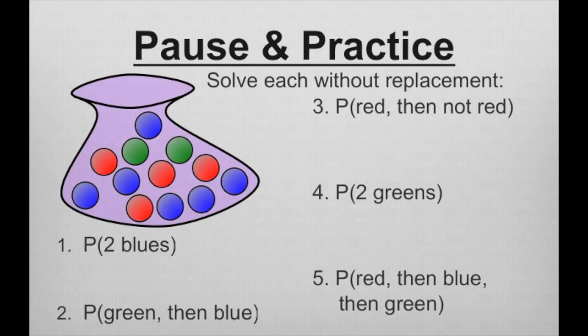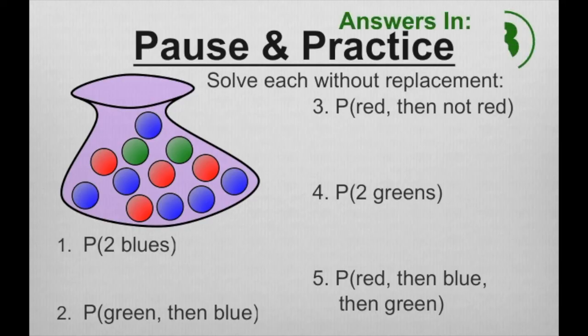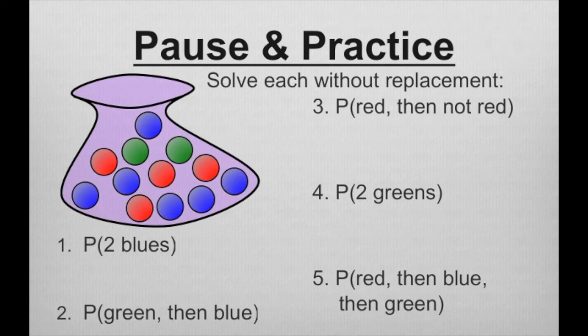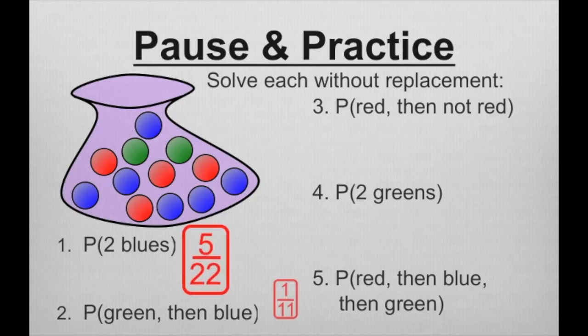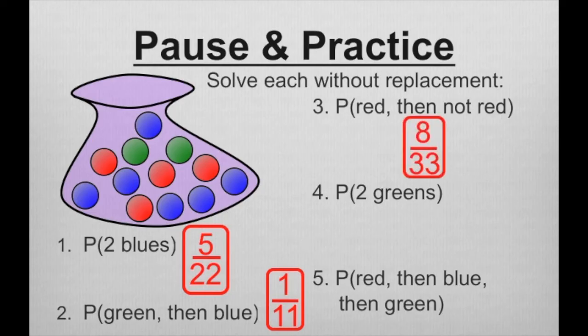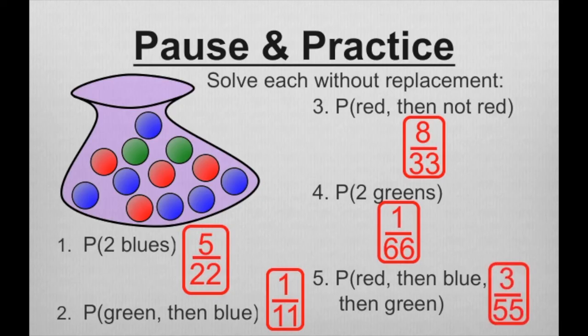Here's your pause and practice. Pause the video, work through the problems, then unpause to check your answers. Number one is five over twenty-two. Number two is one over eleven. Number three is eight over thirty-three. Number four is one over sixty-six. Number five is three over fifty-five.